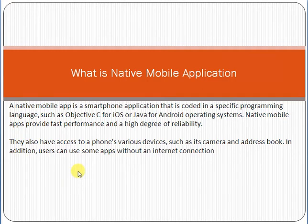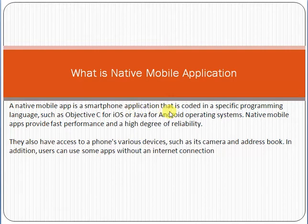So today's topic is: what is a native mobile application? A native mobile application is a smartphone application that is coded in a specific programming language, like Objective-C for iOS development and Java for Android development.